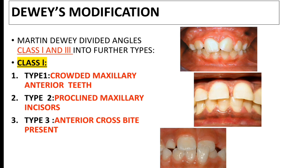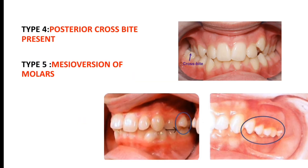Type 3 is anterior crossbite, which you can see in the third picture. Type 4 is posterior crossbite — the arrow in the picture is demonstrating the crossbite. Type 5 is mesio-version of the molars; the two pictures below are showing the mesio-version of the molars, indicated by the circled areas.